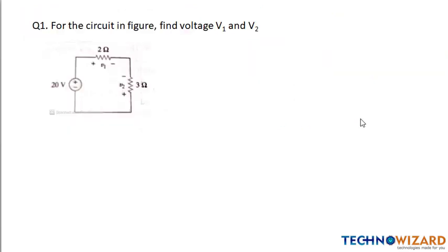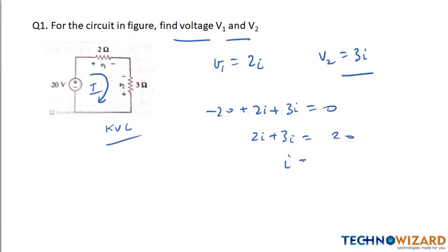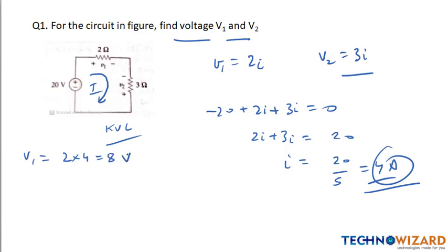Question 1: For the circuit in the figure, find voltage V1 and V2. The current flowing through this circuit is I, so V1 equals 2I and V2 equals 3I. Applying KVL: minus 20 plus 2I plus 3I equals zero. Therefore 5I equals 20 and I equals 4A. So V1 equals 2 into 4 which is 8 volts, and V2 equals 3 into 4 which is 12 volts.